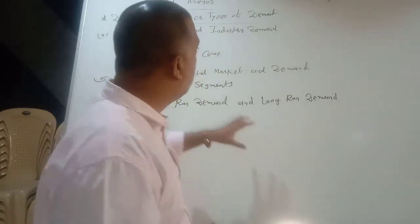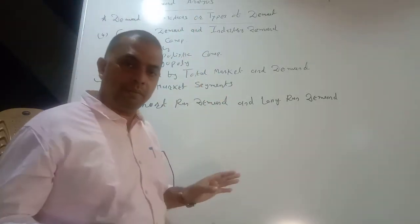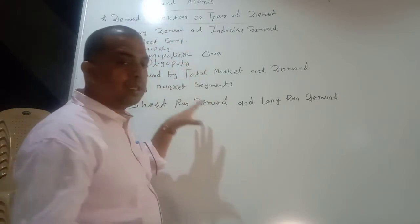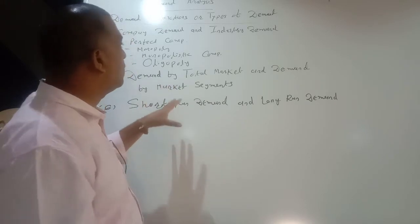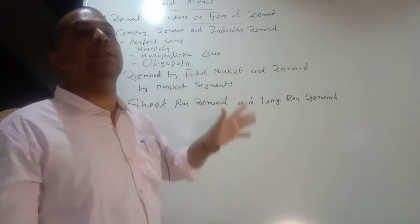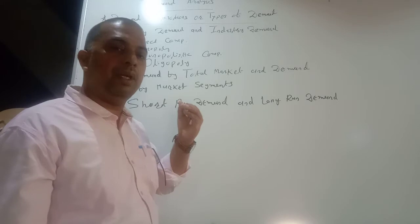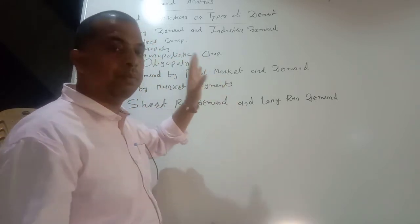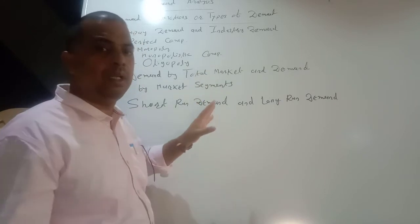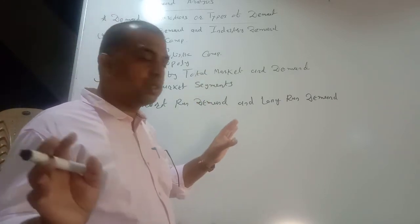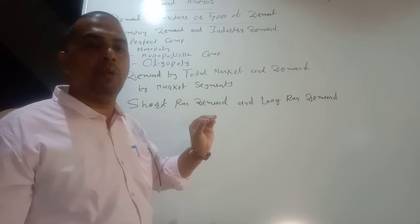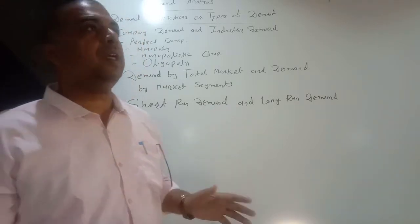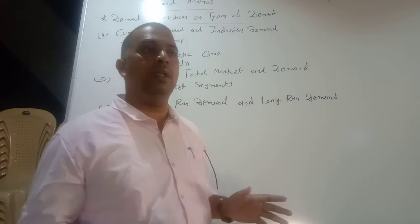When we talk about a particular company, product, or brand, it is called company demand. When we talk about the whole industry, it is called industry demand. Now we will discuss different kinds of market structure. We won't discuss in great detail here because we have separate chapters on perfect competition etc. — a very long syllabus. I will just give you an overview.